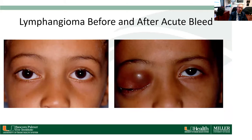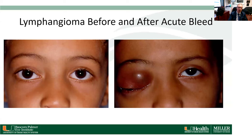Lymphangiomas can present acutely with proptosis, similar to rhabdomyosarcoma. This patient had a known lymphangioma of his right orbit and after trauma playing football had acute hemorrhage into the lymphangioma. This can be very dangerous as it can compress the optic nerve and needs to be treated urgently with drainage of the bleed into the tumor.